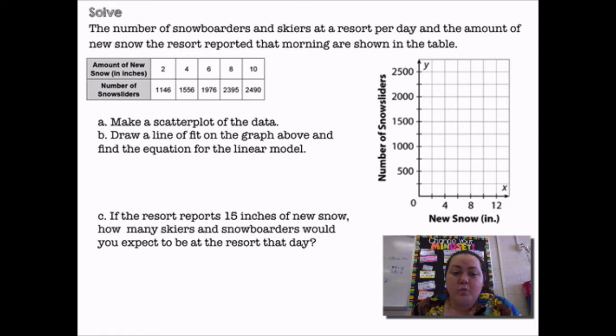So my first point is 2, 1,146. So 2 inches of snow, and there was 1,146 snowboarders and snow skiers. So there's my first point. The next one is 4, 1,556. So my point would be right around there. And then 6, 1,976. 8, 2,395. And 10, 2,490. So all we really did so far was plot ordered pairs.